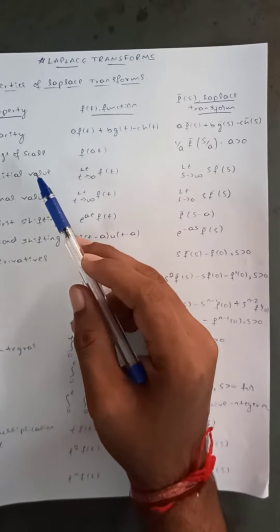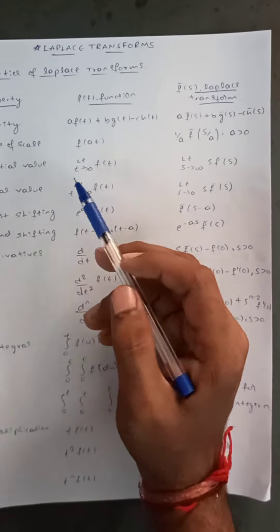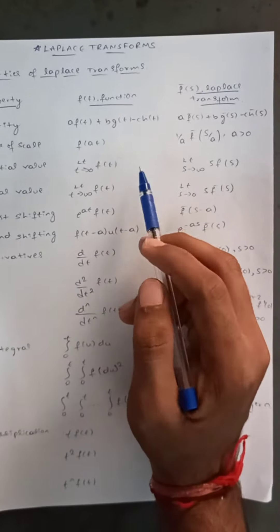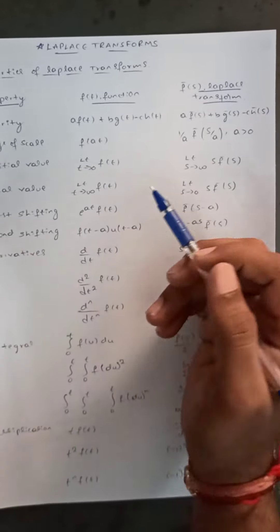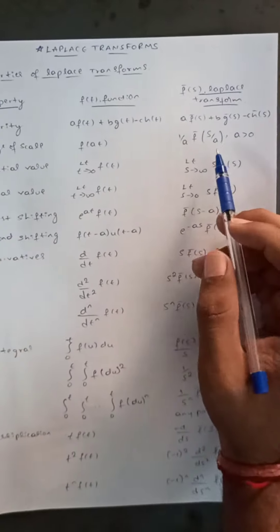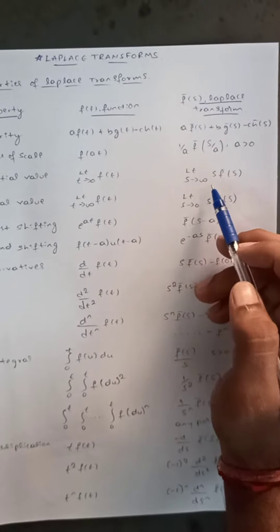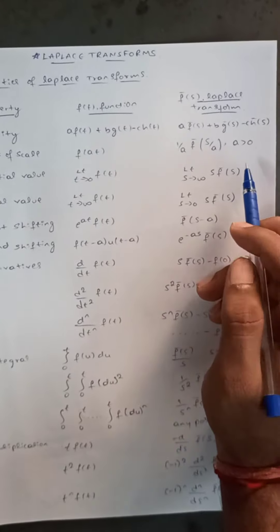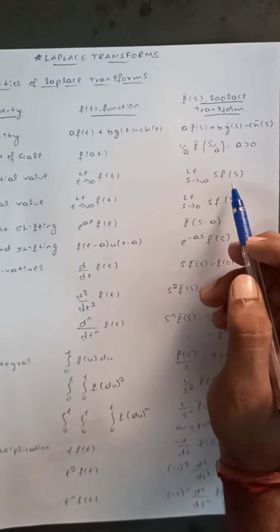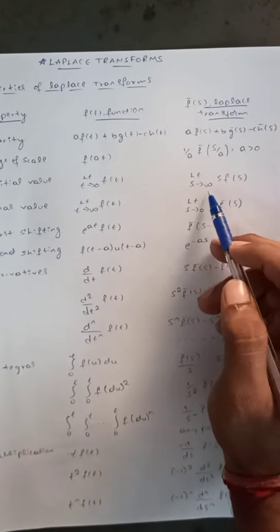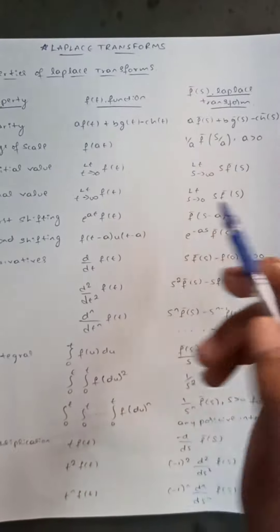The initial value theorem states that the limit of f(t) as t tends to zero equals the limit of s·f̄(s) as s tends to infinity.